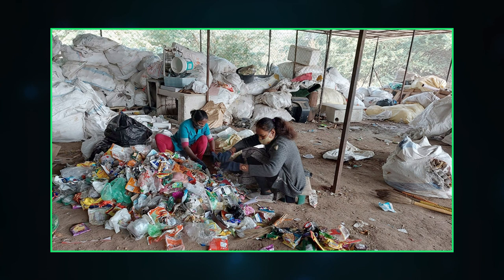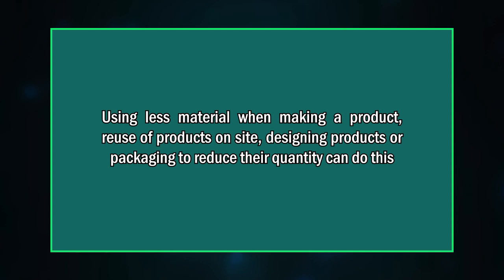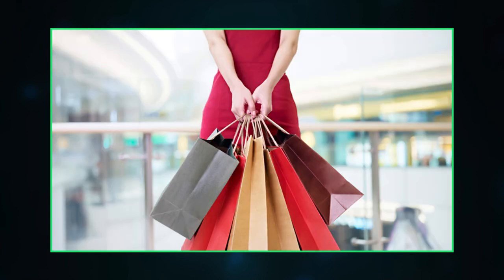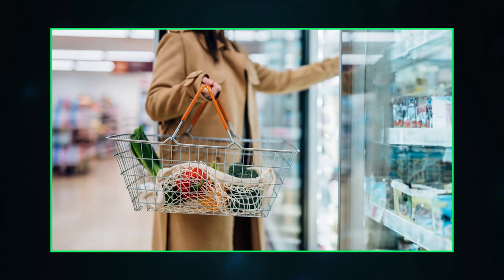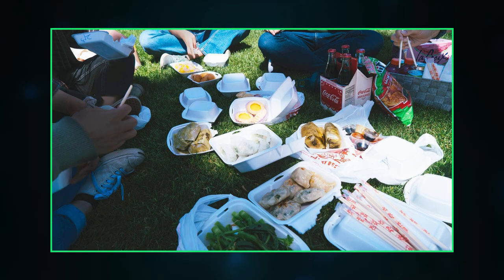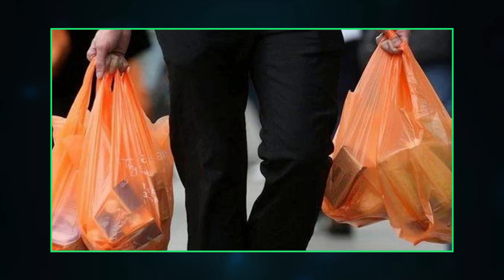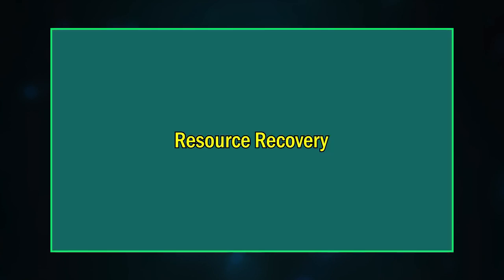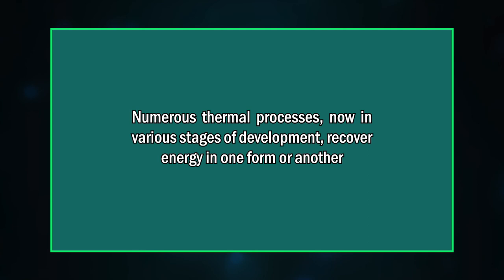Source reduction is one of the fundamental ways to reduce waste. This can be done by using less material when making a product, reusing products on site, and designing products or packaging to reduce their quantity. On an individual level, we can reduce the use of unnecessary items while shopping, buy items with minimal packaging, avoid buying disposable items, and avoid asking for plastic carry bags.